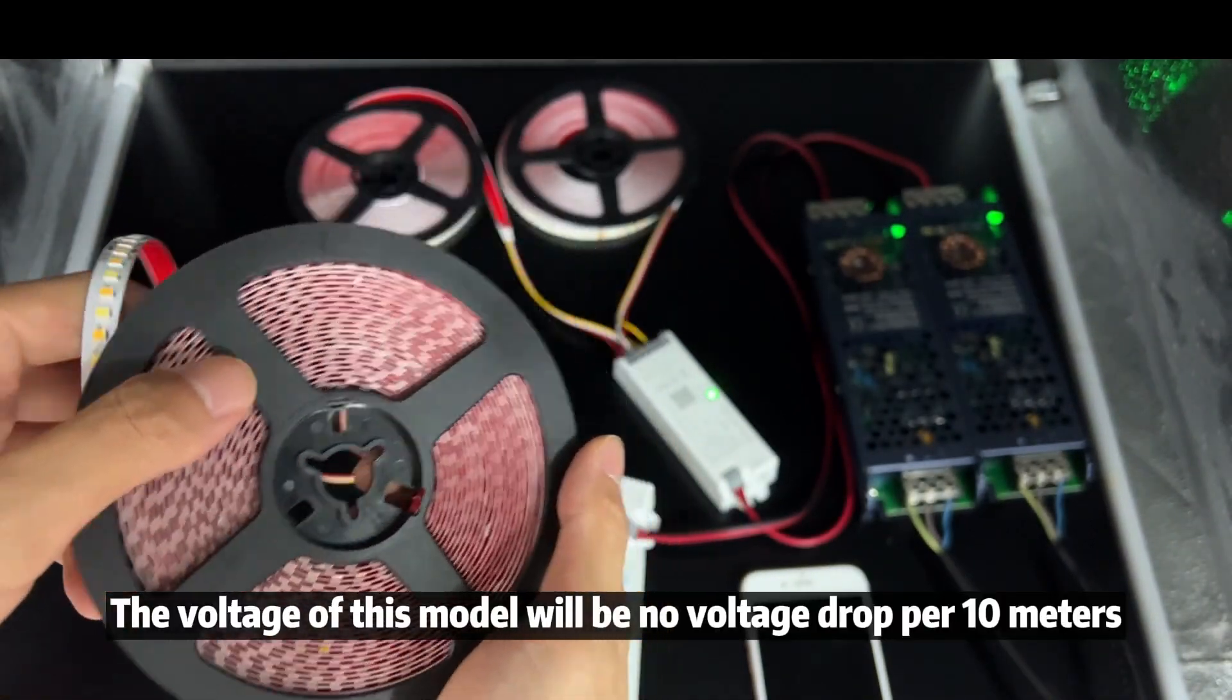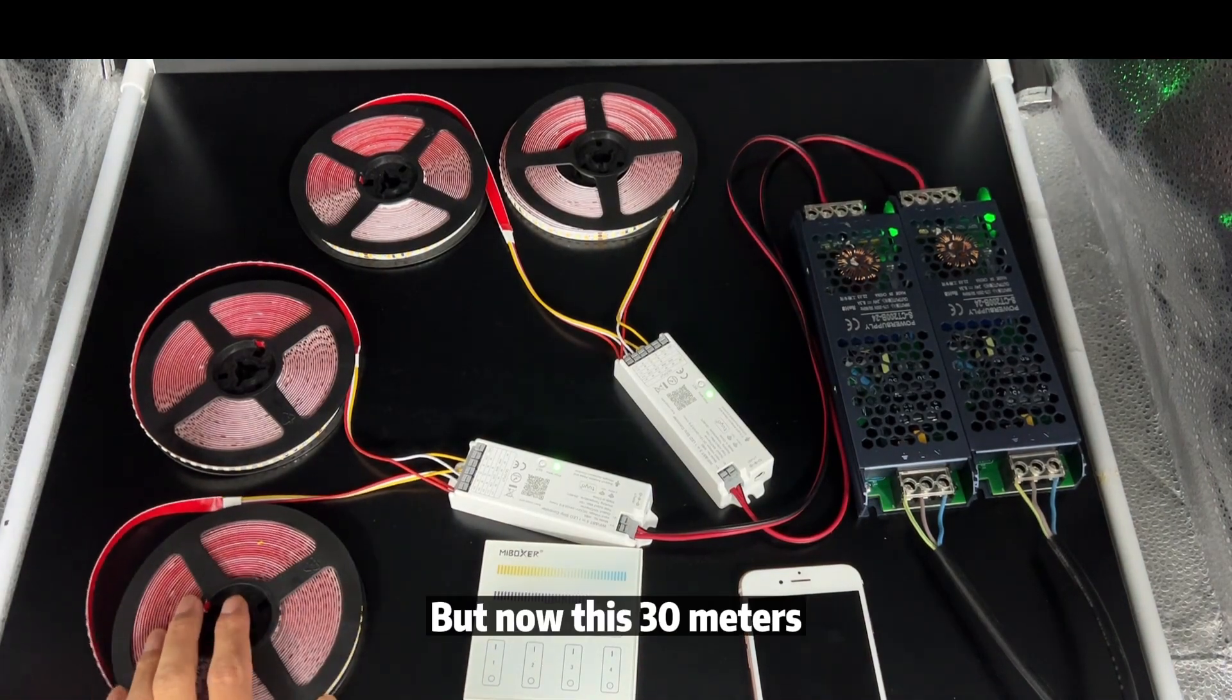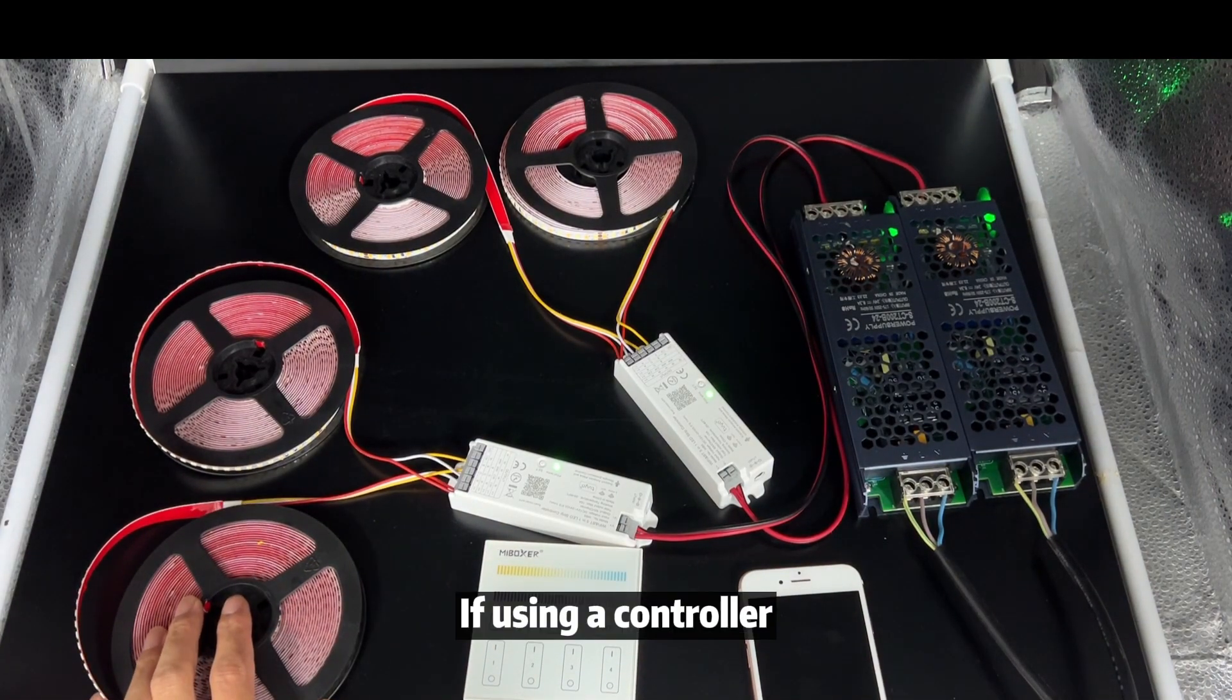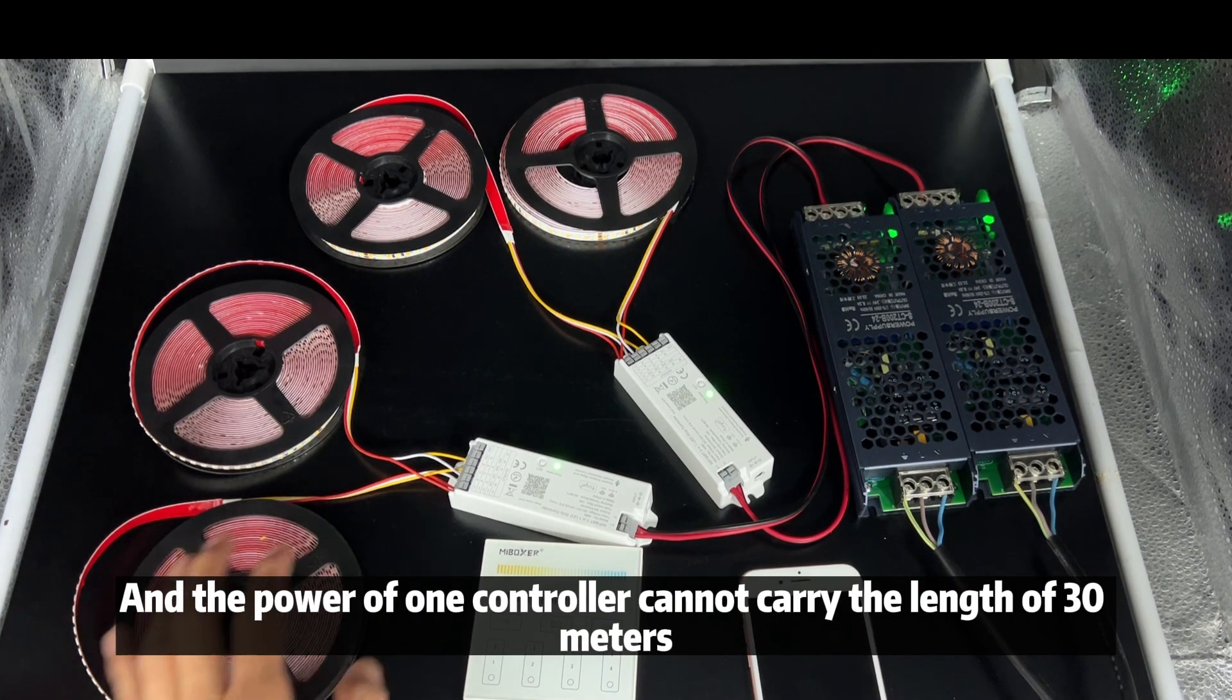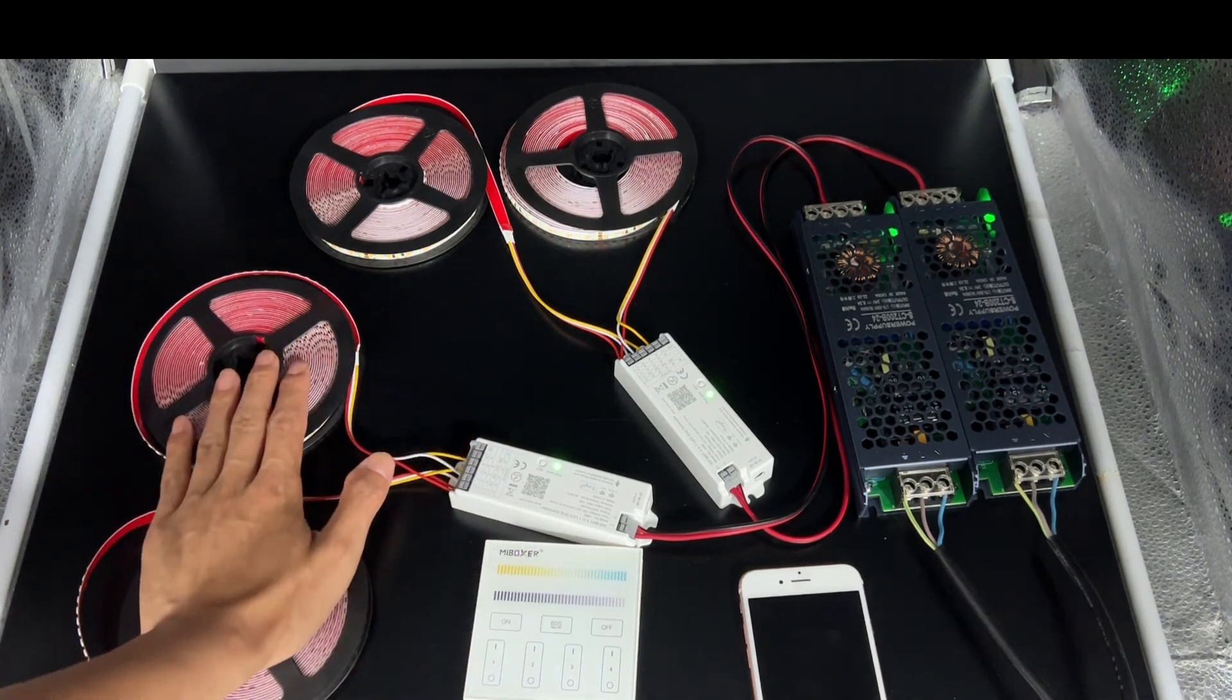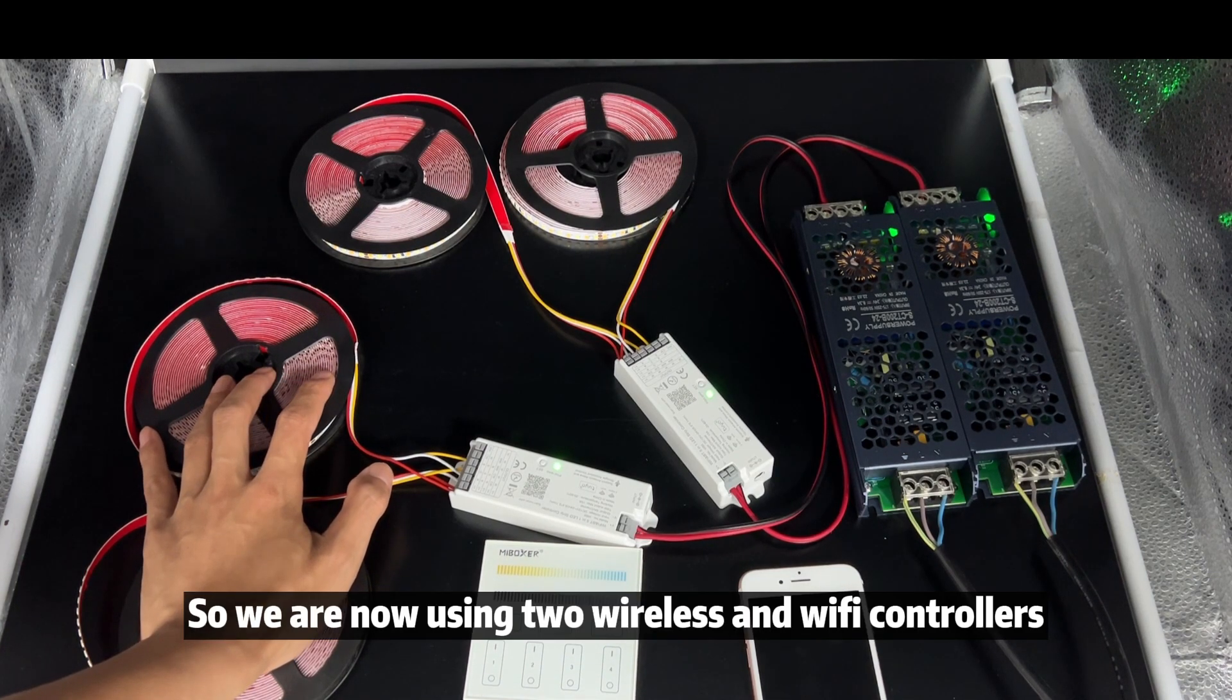The voltage of this model will be no voltage drop per 10 meters. But now this 30 meters, if using one controller, will cause a voltage drop over 10 meters. And the power of one controller cannot carry the length of 30 meters. So we are now using two wireless Wi-Fi controllers.